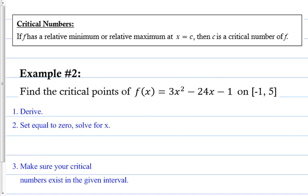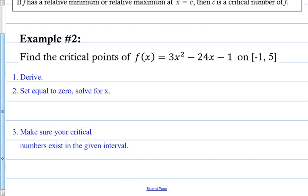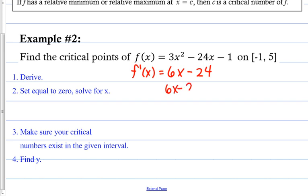Example 2: Find the critical point of f(x) = 3x² - 24x - 1 on the interval [-1, 5]. Step 1, derive: f prime of x equals 6x - 24. Step 2, set equal to zero and solve for x: 6x - 24 = 0, so 6x = 24, divide by 6, giving x = 4. That is my critical number.